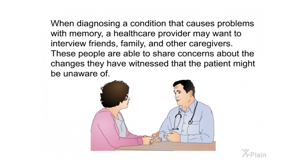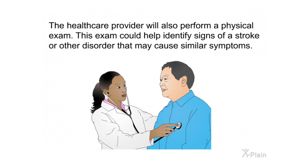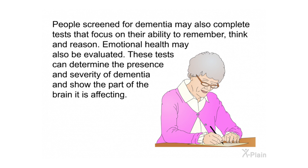When diagnosing a condition that causes memory problems, a healthcare provider may interview friends, family, and other caregivers, who can share concerns about changes they have witnessed that the patient might be unaware of. The provider will also perform a physical exam to help identify signs of a stroke or other disorder. People screened for dementia may complete tests that focus on their ability to remember, think, and reason, and emotional health may also be evaluated to determine the presence and severity of dementia.